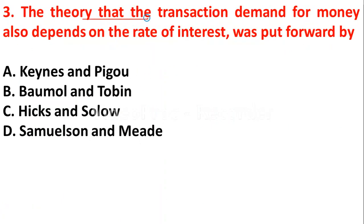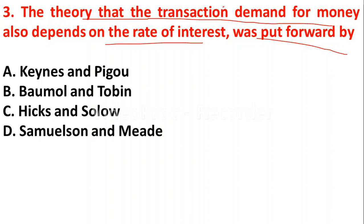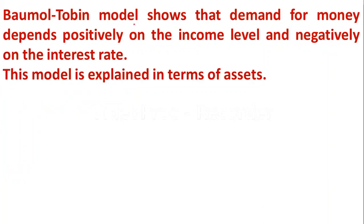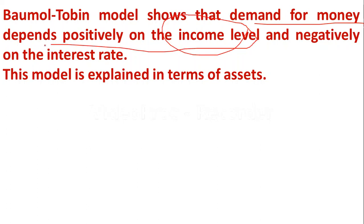The next question: the theory that the transaction demand for money also depends on the rate of interest was given by — Option A: Keynes and Pigou; Option B: Baumol and Tobin; Option C: Hicks and Solow; Option D: Samuelson and Mead. The right answer is option B, Baumol and Tobin. Baumol and Tobin's model shows that demand for money depends positively on the income level and negatively on the interest rate. This model was explained in terms of assets.